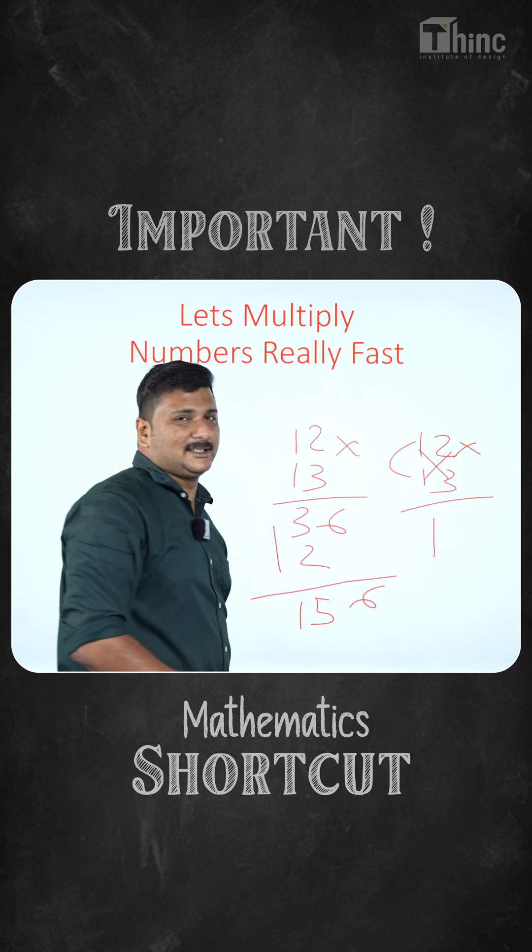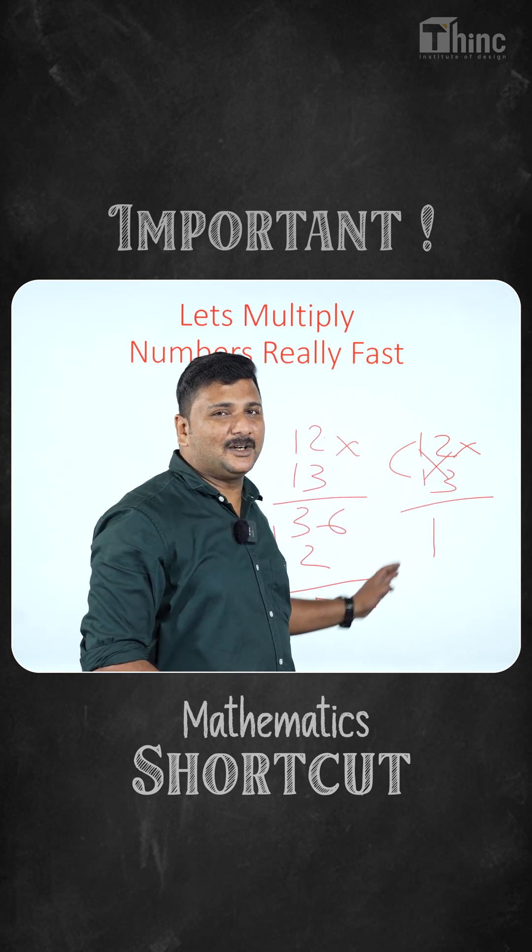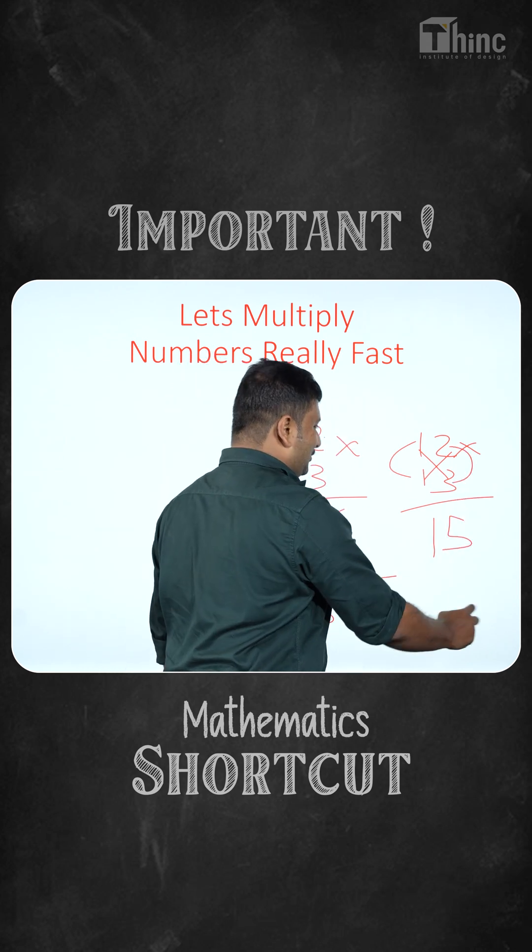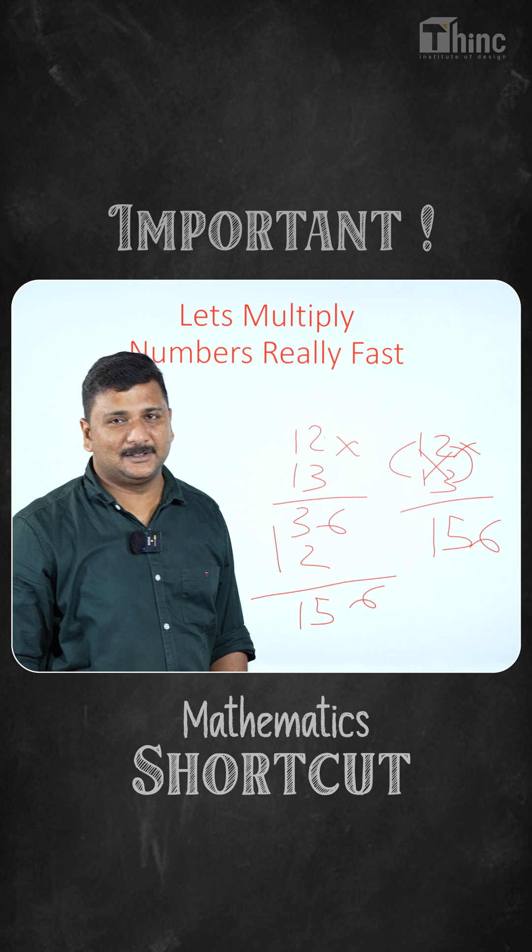Now just cross multiply and add the numbers. So 1 x 3 is 3, 1 x 2 is 2, what is 3 plus 2? That is 5. And then multiply the last two, 2 x 3 that is 6, so 156 will be the correct answer.